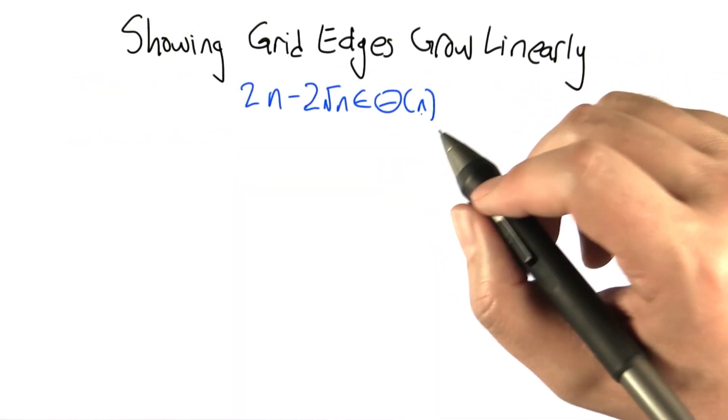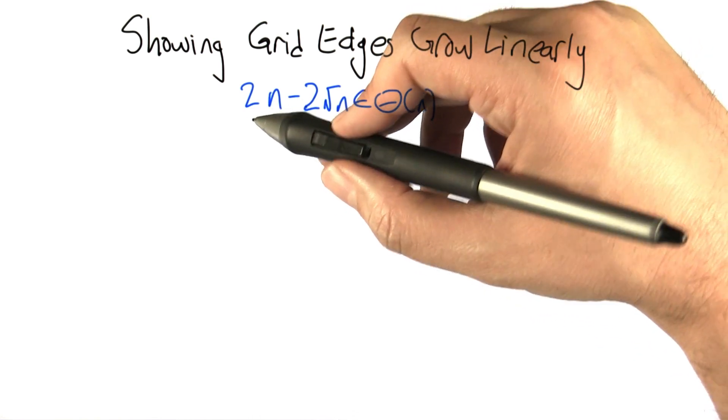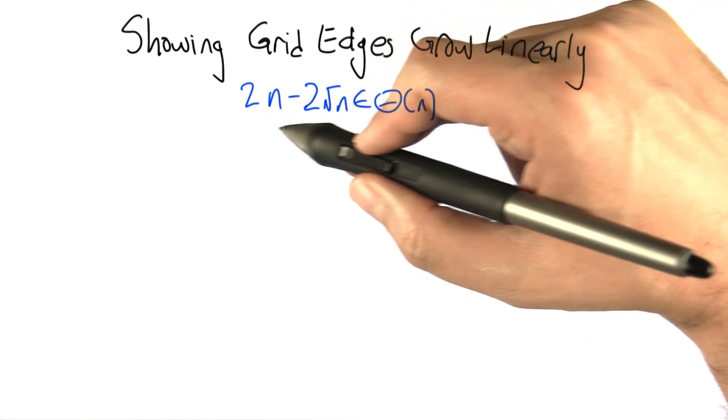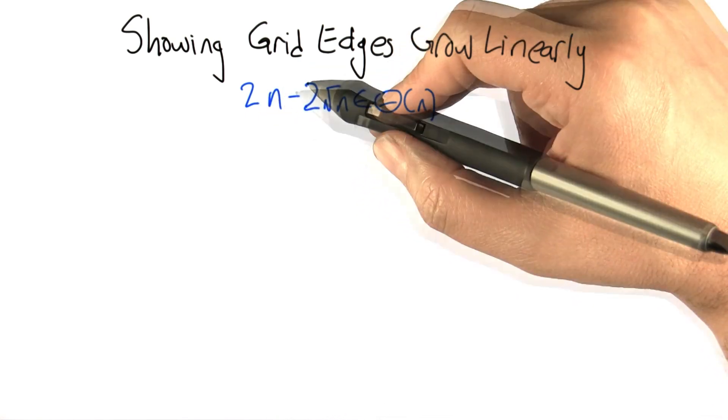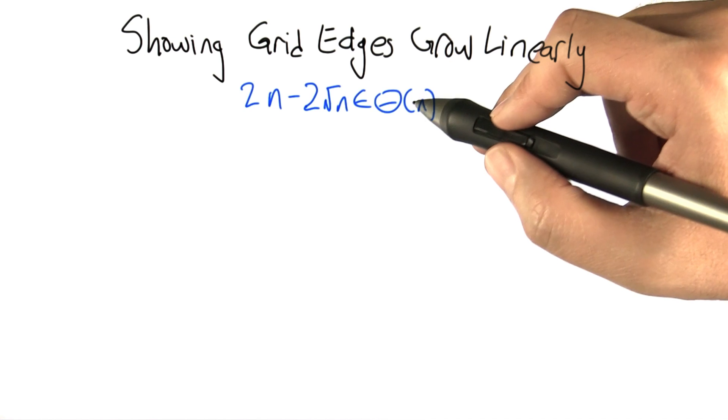Just to beat this dead horse a little bit longer, let's use the definition of Big Theta to show that this expression function that we determined for the growth in edges in a grid, 2n minus 2√n, really is just a linear function. It grows like Big Theta of n.